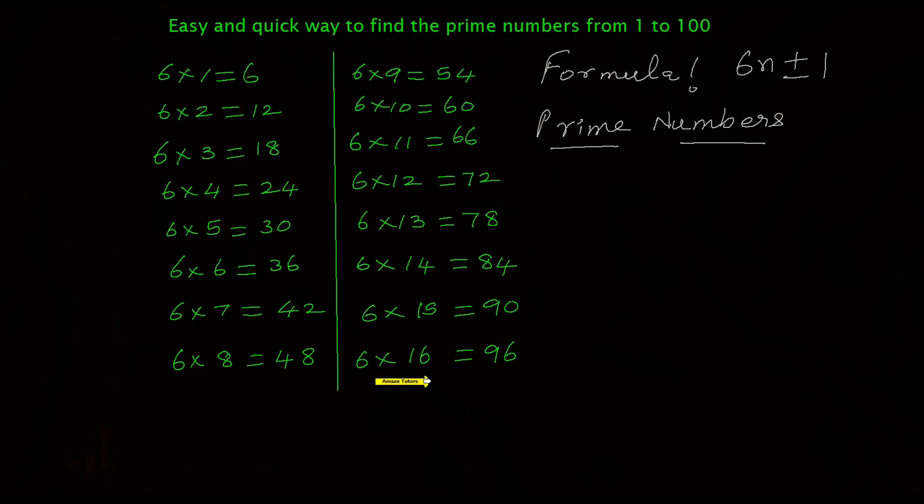You should know up to 6×16=96. This is required to find out the prime numbers really quick. And this is the formula: 6n plus or minus 1. What is 6n? Multiple of 6. All the right side answers are multiples of 6.